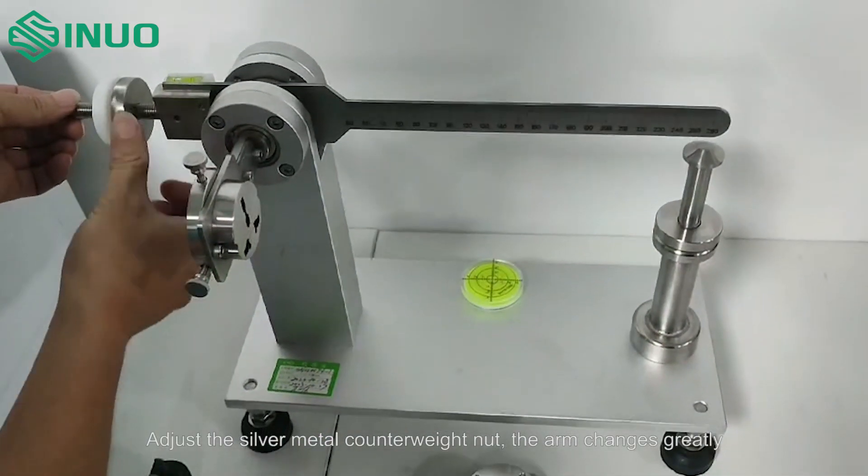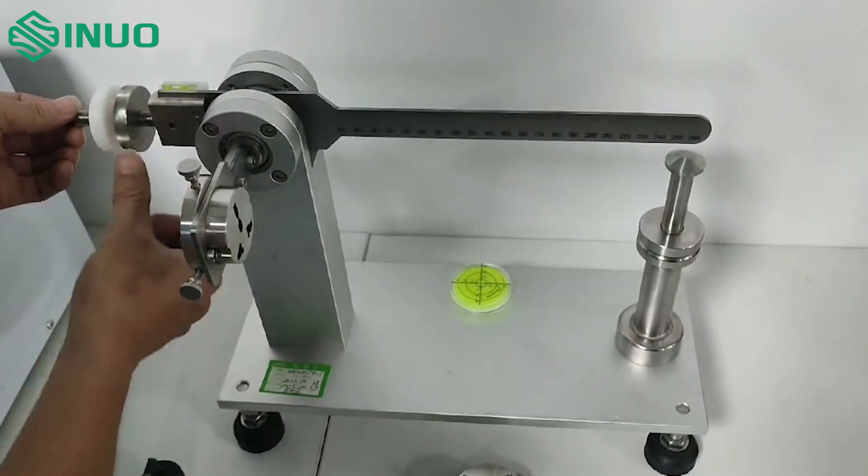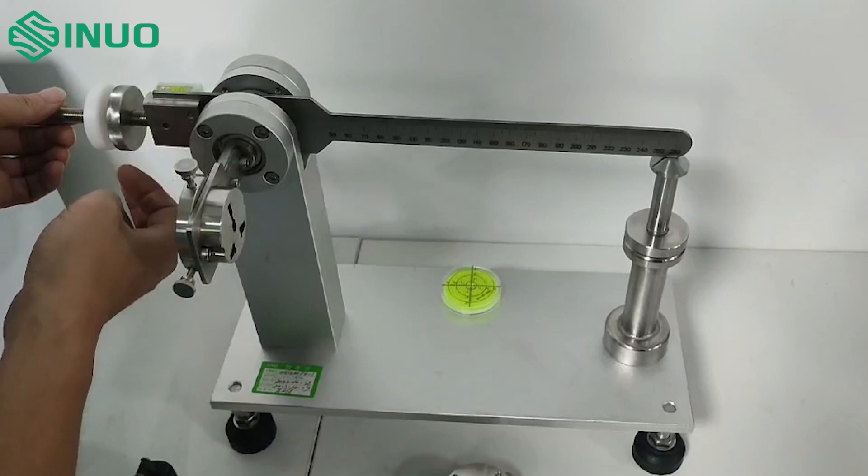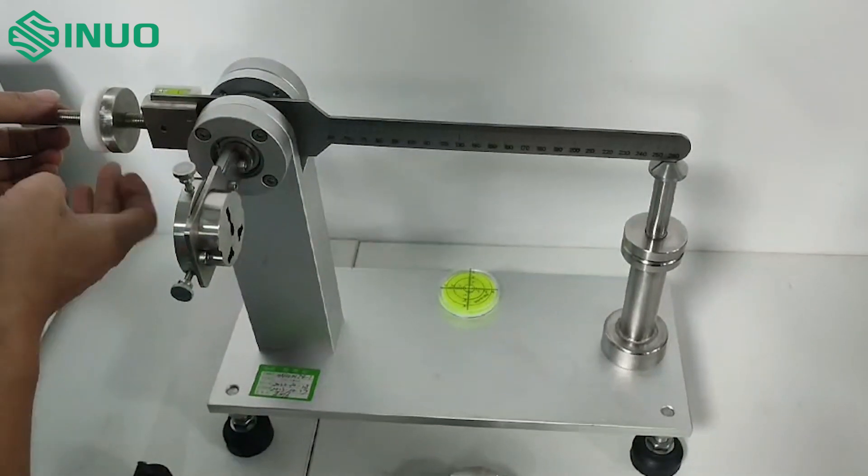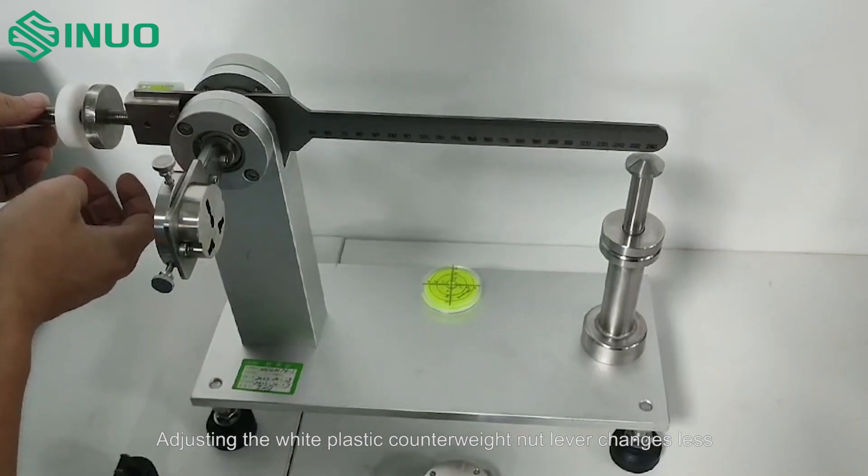For example, we install the E27 bulb on the E27 sockets. Select the installation location according to the sample.